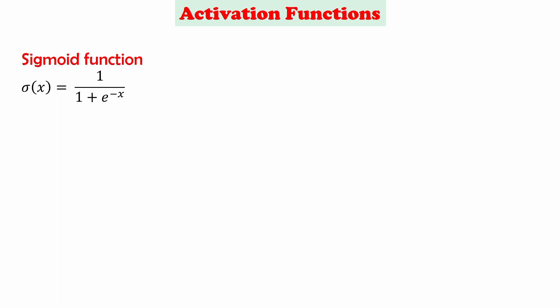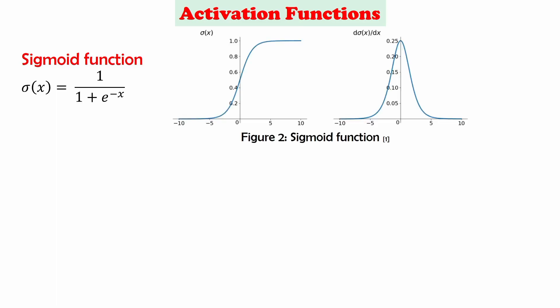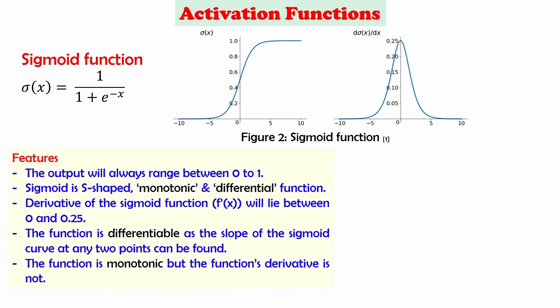The most commonly used activation function is the sigmoid function, given by σ(x) = 1 / (1 + e^(−x)). The figure shows the sigmoid function whose value ranges from 0 to 1. It is S-shaped in form, and it is both monotonic and differentiable. The derivative of the sigmoid function lies between 0 and 0.25. The function is differentiable, as the slope of the sigmoid curve at any two points can be found. The function is monotonic, but its derivative is not.